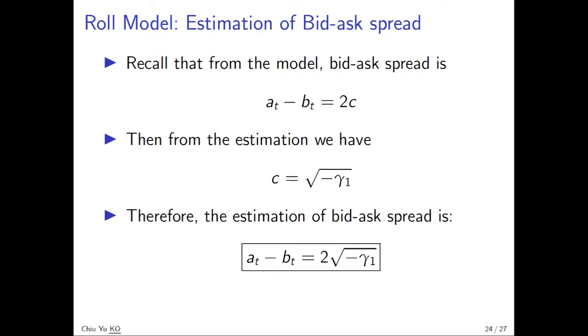And then you calculate its first order covariance, take the negative value, take the square root times two, then you can have bid spread.